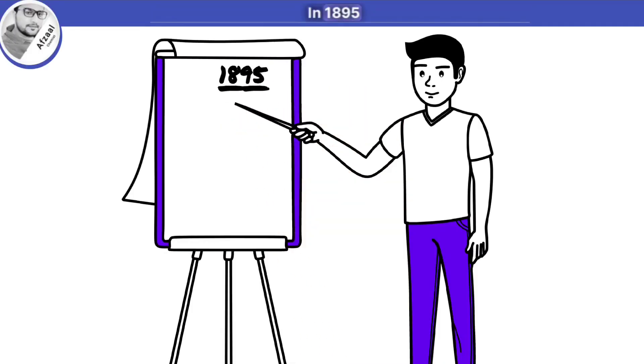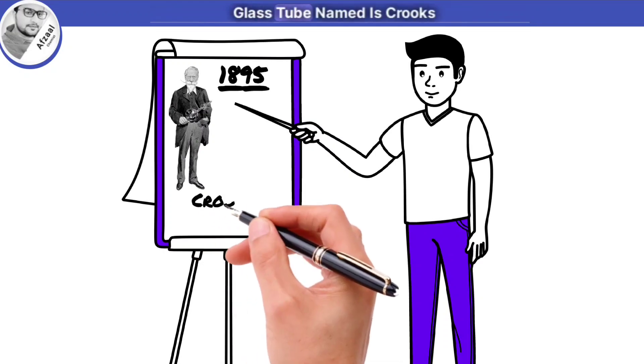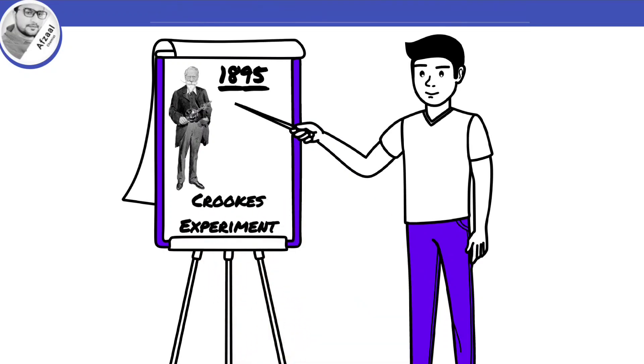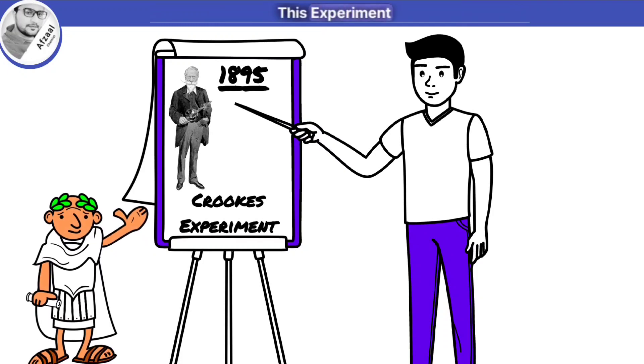In 1895, British physicist Sir William Crookes performed experiments in a glass tube, named as Crookes' Experiment. Let's see how Crookes performed this experiment.